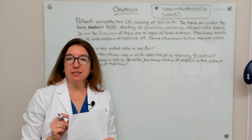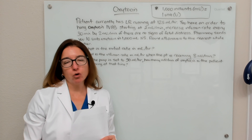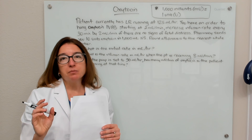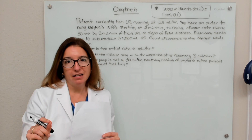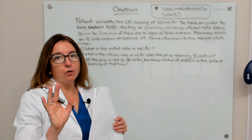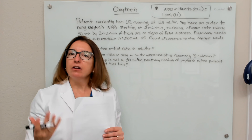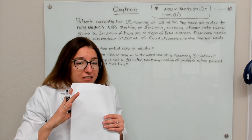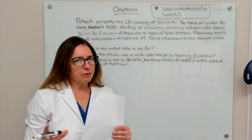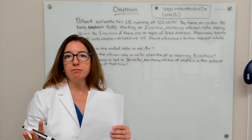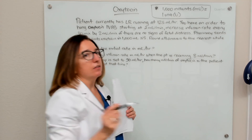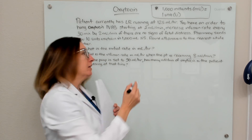Oxytocin is a uterine stimulant that is used to induce labor as well as control postpartum bleeding. Oxytocin comes in units per mL and is prescribed in milli-units per minute, and we would titrate that rate — meaning we would increase or decrease that rate per the order. Milli-units is not a unit of measure you see all the time, but we handle it the same way as milligrams. Don't get freaked out — it's just another unit of measure. Keep in mind that 1,000 milli-units equals one unit, and that is a conversion factor we will need.